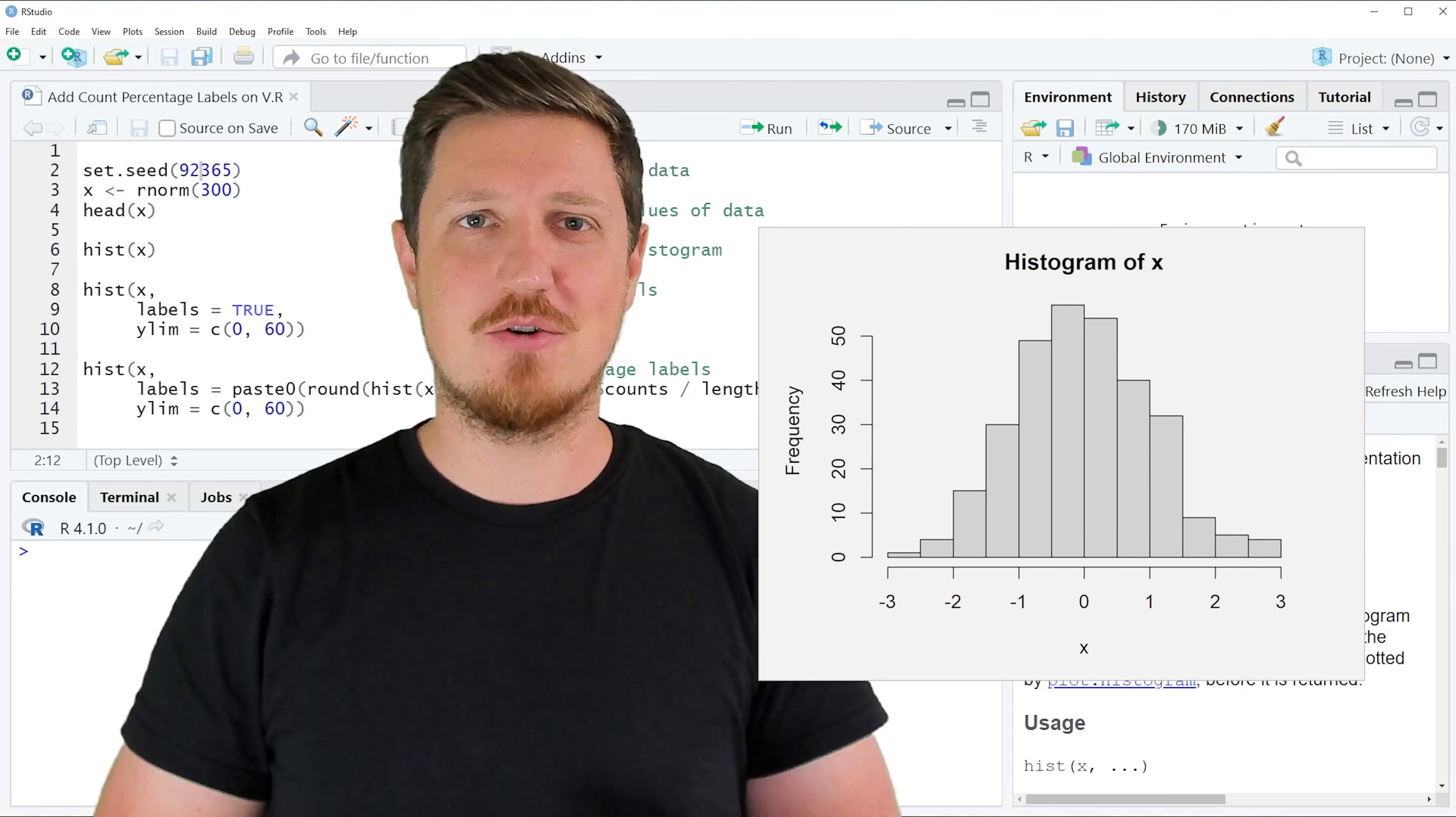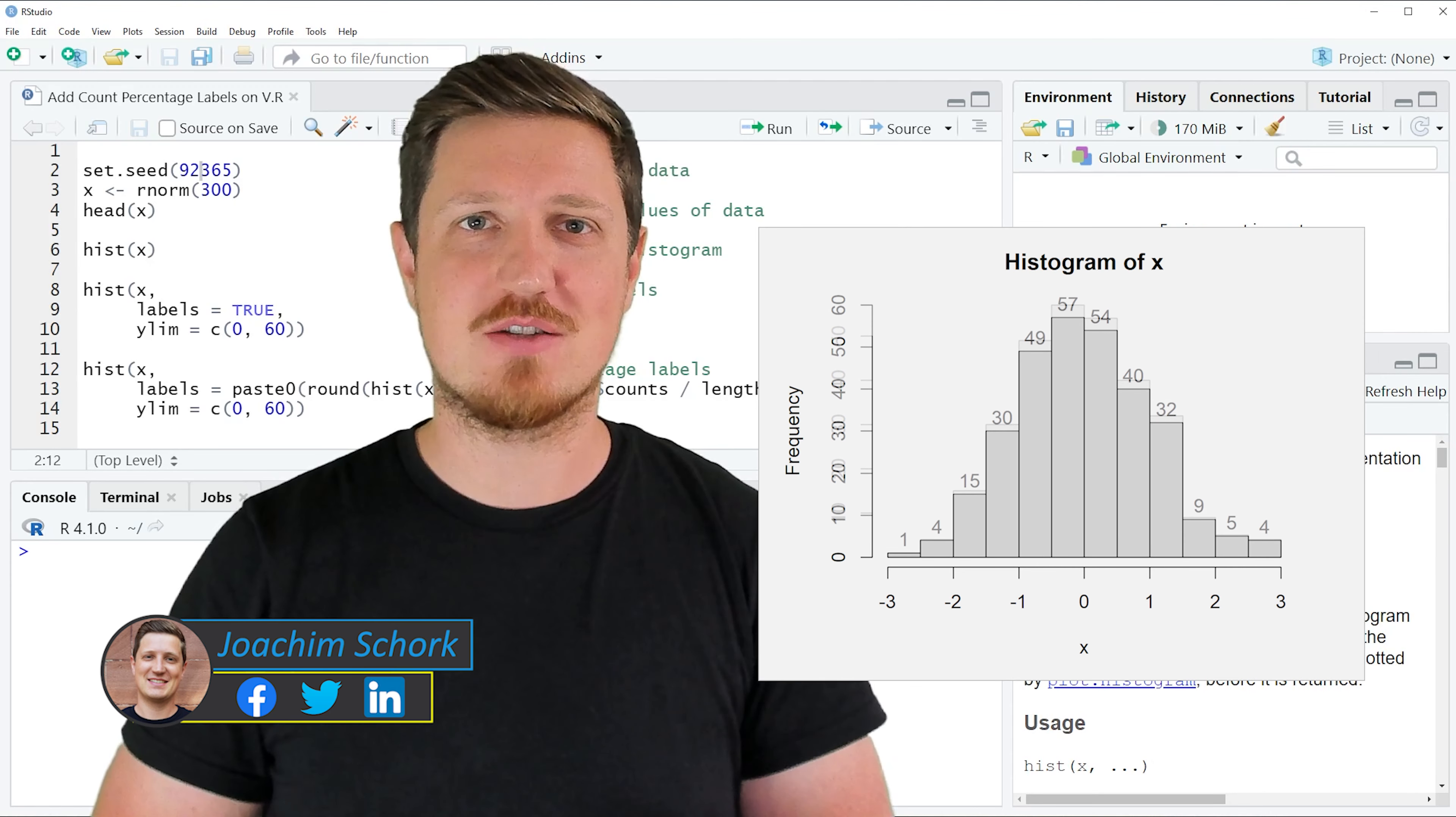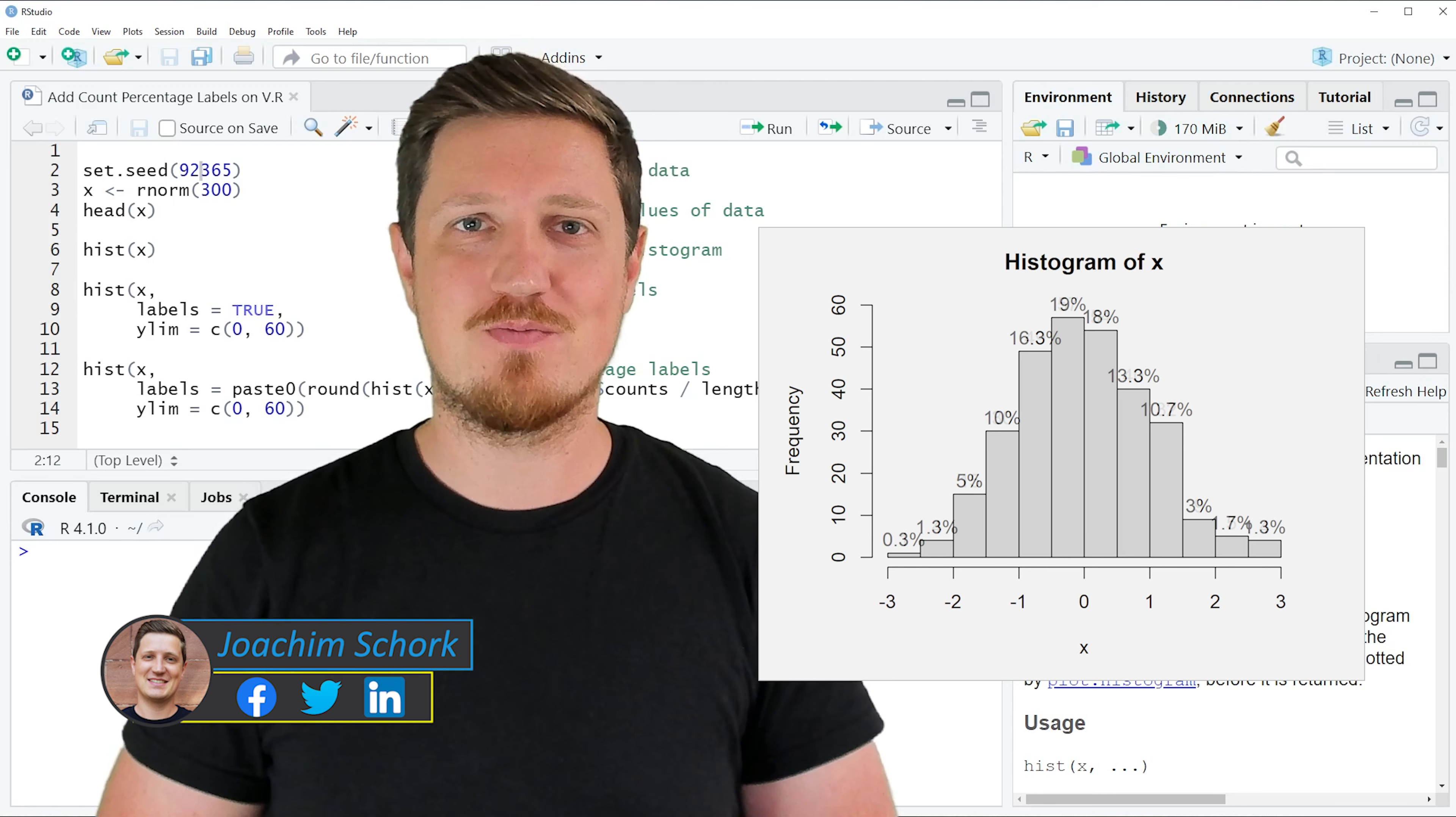In this video I'll explain how to add count and percentage labels on top of histogram bars using the R programming language. So without too much talk, let's dive into the R code.